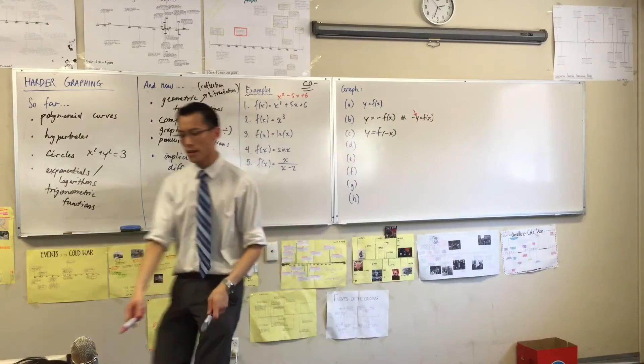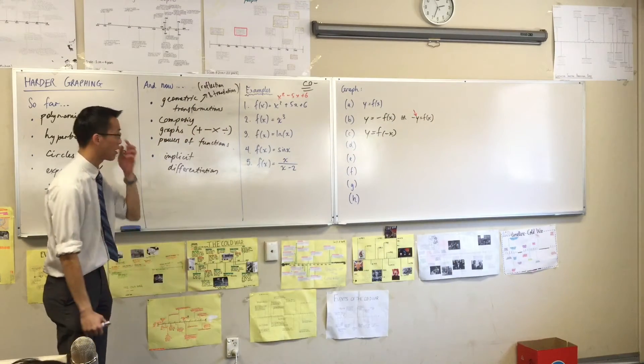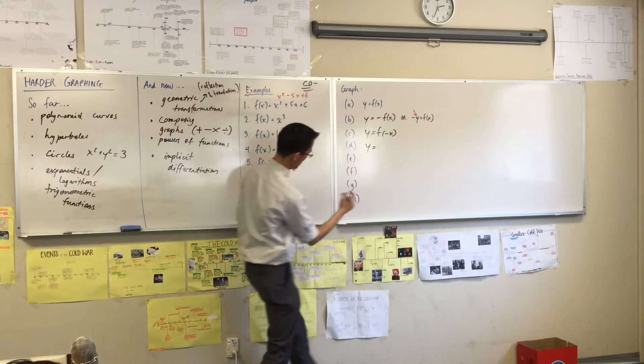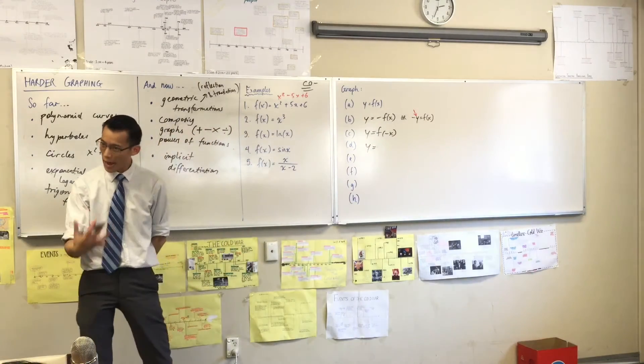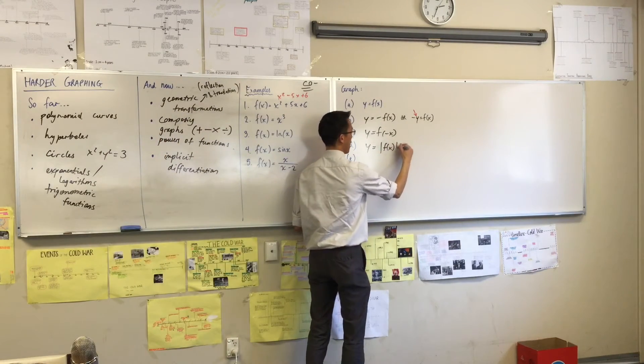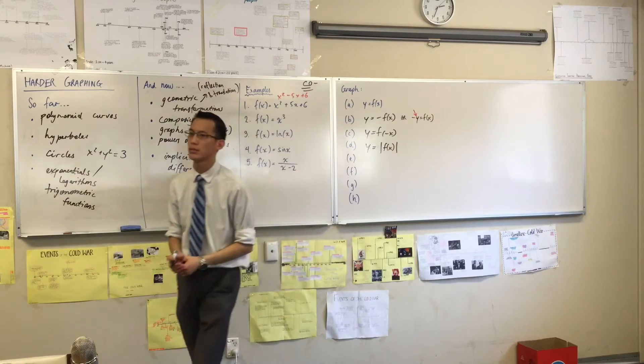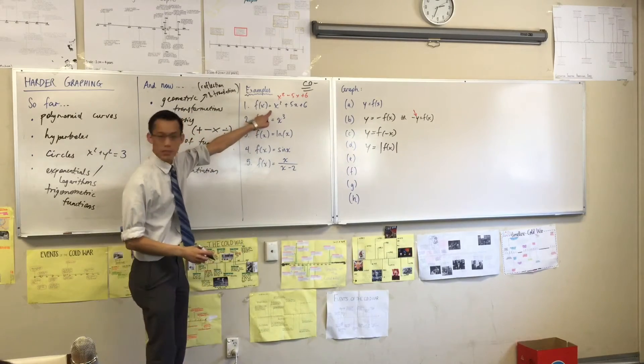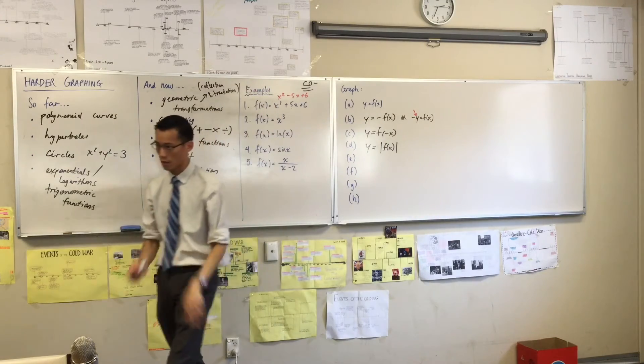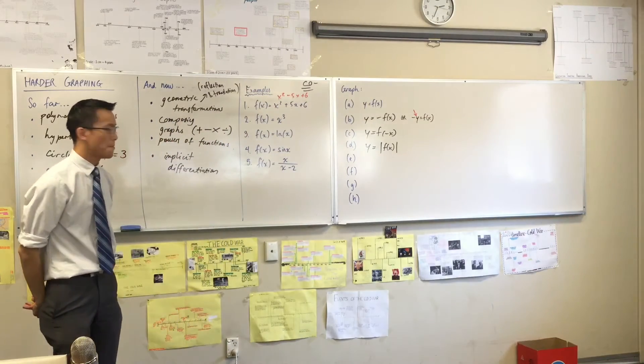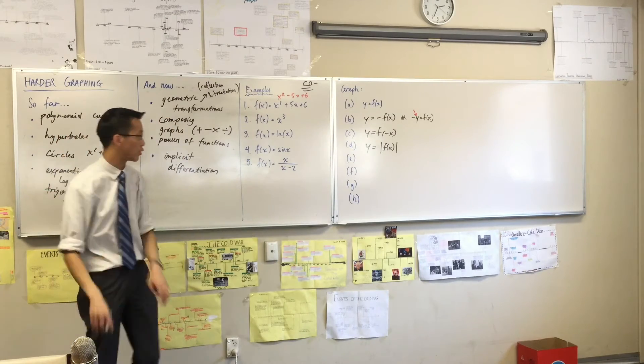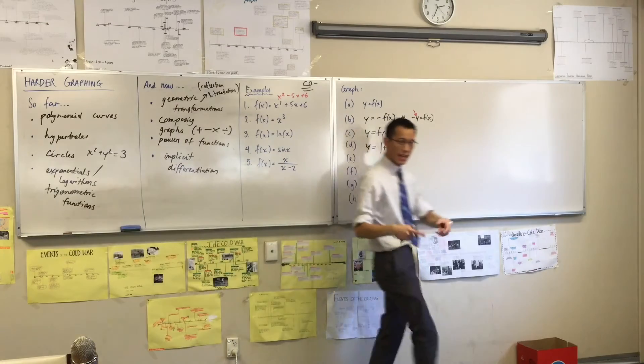Now remember I said I was going to revisit this absolute value guy. Well, in the same way I could ask: what would happen if I carry out a reflection by instead applying an absolute value to the whole thing? What would that look like if instead of graphing this, I graphed the absolute value of this? That's not too hard to visualize. Yeah, all the negative bits are going to flip up.